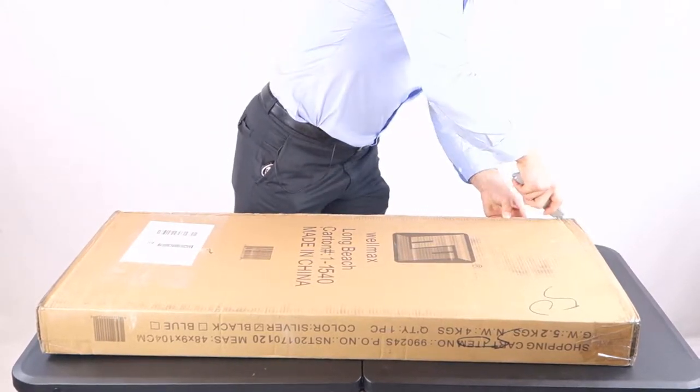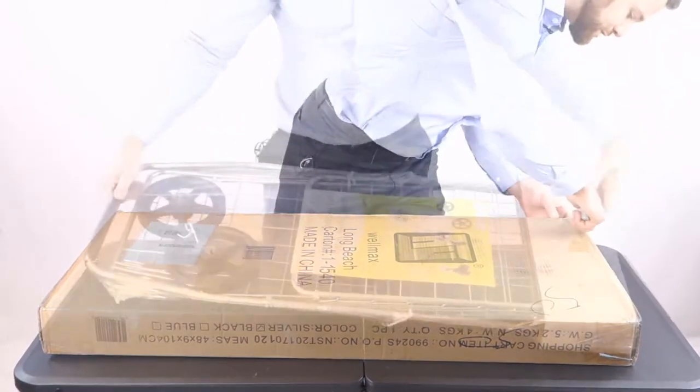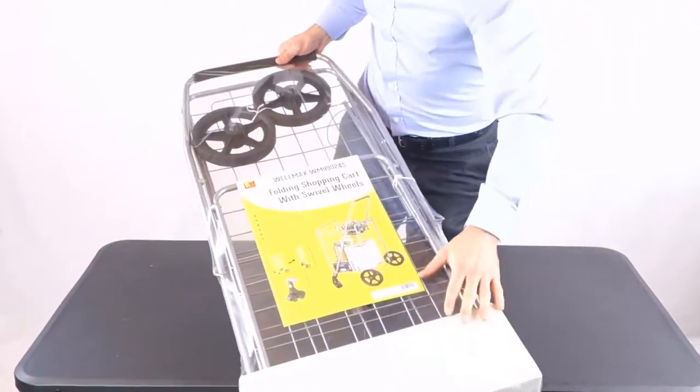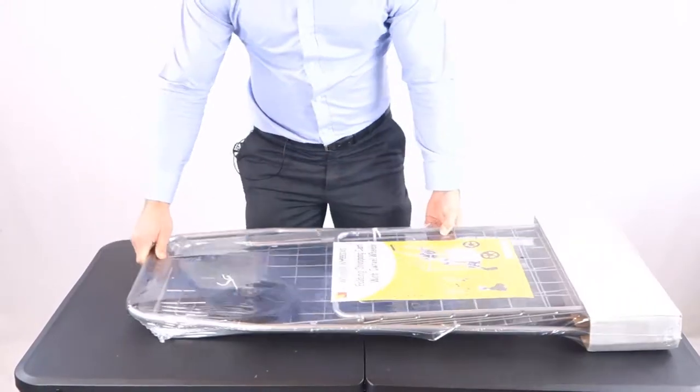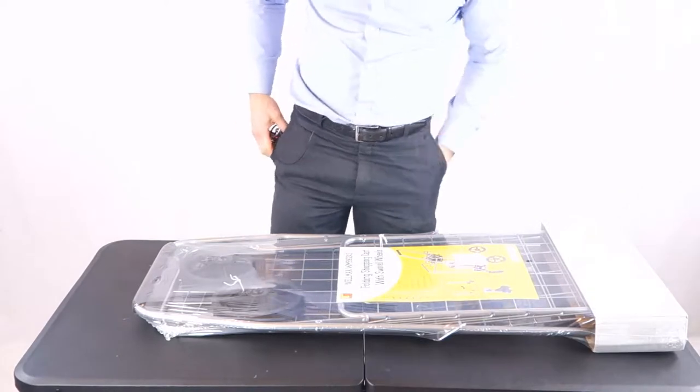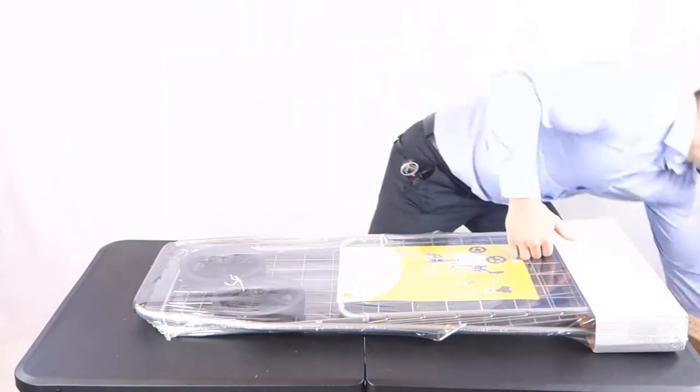So let's take a look, open this box and see what it's all about. Right here, folding shopping cart with swivel wheels. Shrink wrapped. Let's get this open and see what we got.